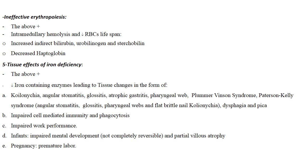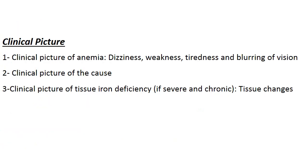Clinically, the tissue stage is presented by koilonychia, glossitis, angular stomatitis, atrophic gastritis, Plummer-Vinson syndrome, impaired immunity, impaired work performance, and possibly impaired mental development in infants. The clinical presentation of iron deficiency anemia also includes the general presentation of anemia: dizziness, weakness, headache, loss of concentration, and blurring of vision. These are in addition to the special presentation of iron deficiency when it is late and affects tissues, as well as presentation of the cause of iron deficiency, mostly in the form of chronic bleeding.